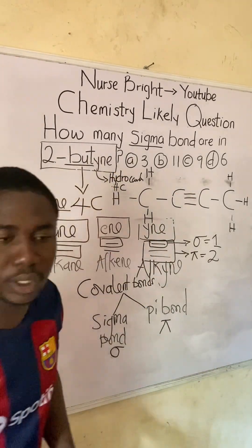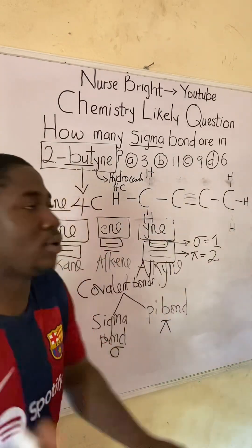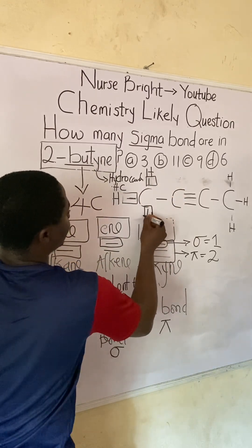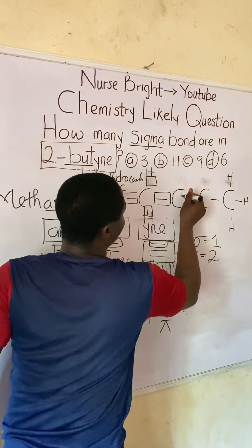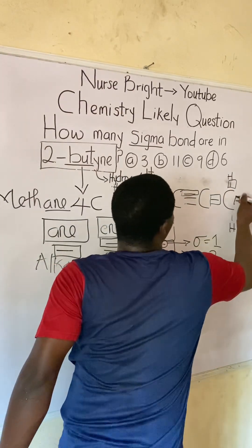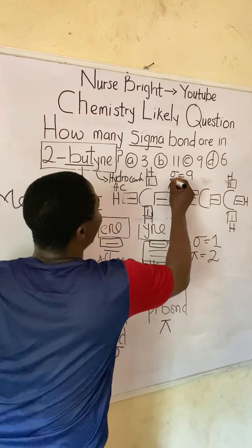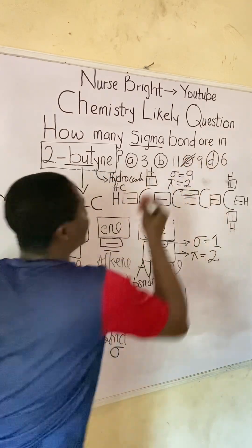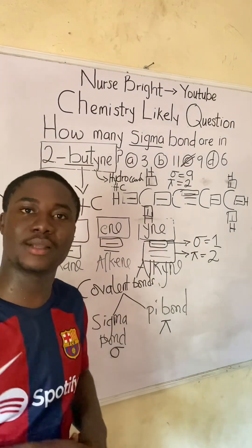With that knowledge, let's get back to this practice question and count the sigma bonds. Remember: the first bond in any atom-to-atom connection is your sigma bond. Let's count: one, two, three, four, five — those are five sigma bonds from the C–H and C–C single bond connections. Then counting all connections: six, seven, eight, and nine. We have nine sigma bonds in total. How many pi bonds? Two pi bonds — from the triple bond. So the answer to this question is option C: nine sigma bonds.